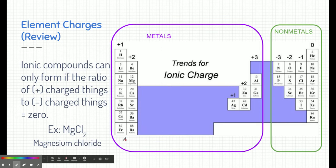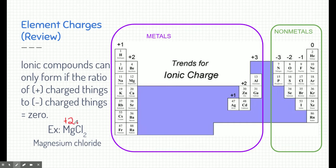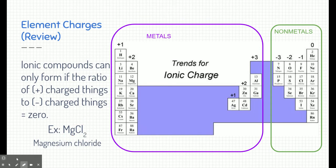Using magnesium and chlorine as an example: magnesium has a charge of plus two and chlorine has a charge of minus one. If you had just one of each, the charges wouldn't cancel out. So in order to create an ionic compound between magnesium and chlorine, there need to be two chlorines attached to the magnesium so the total charge is canceled out. This is a standard and important rule for ionic compounds.